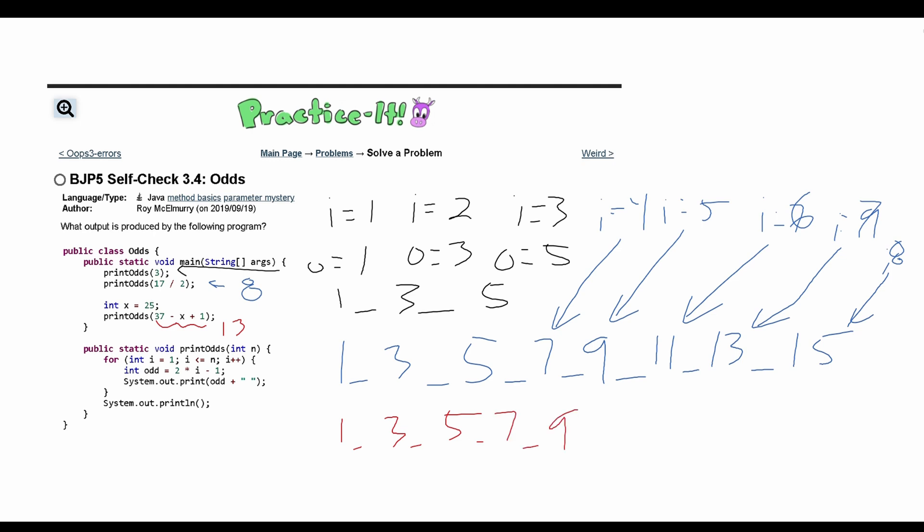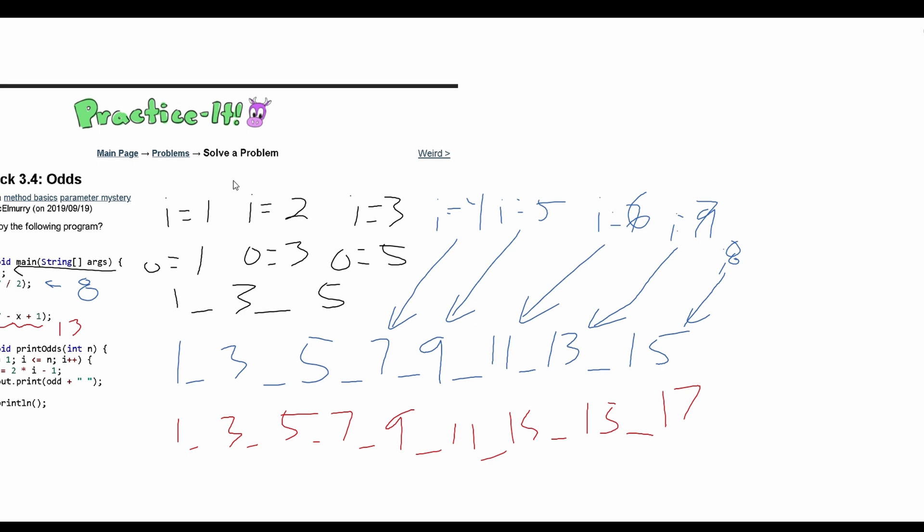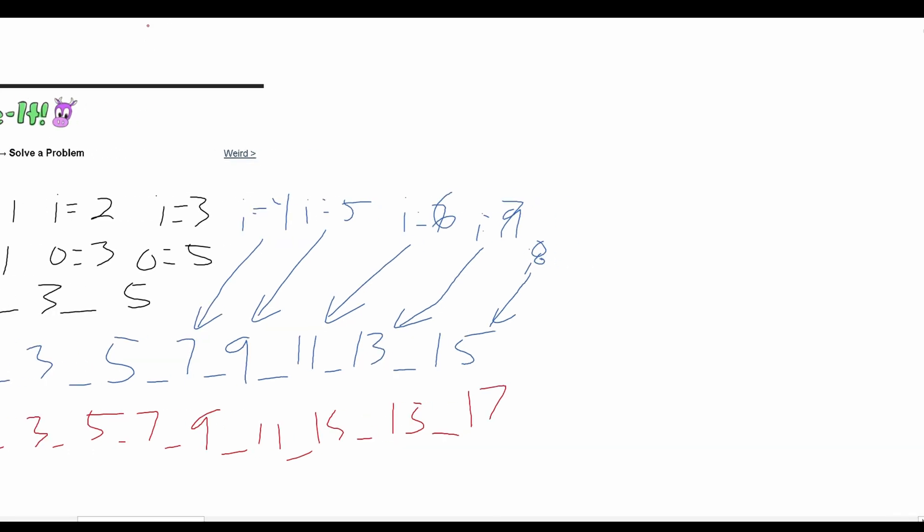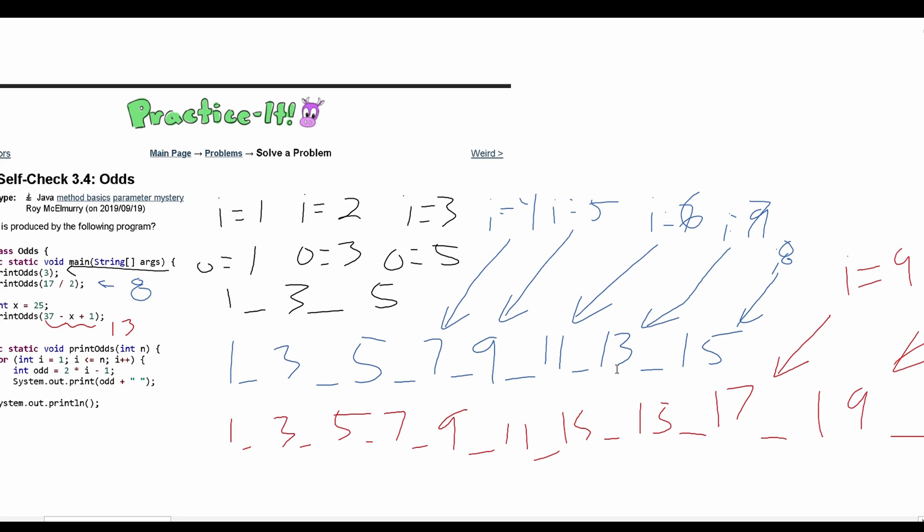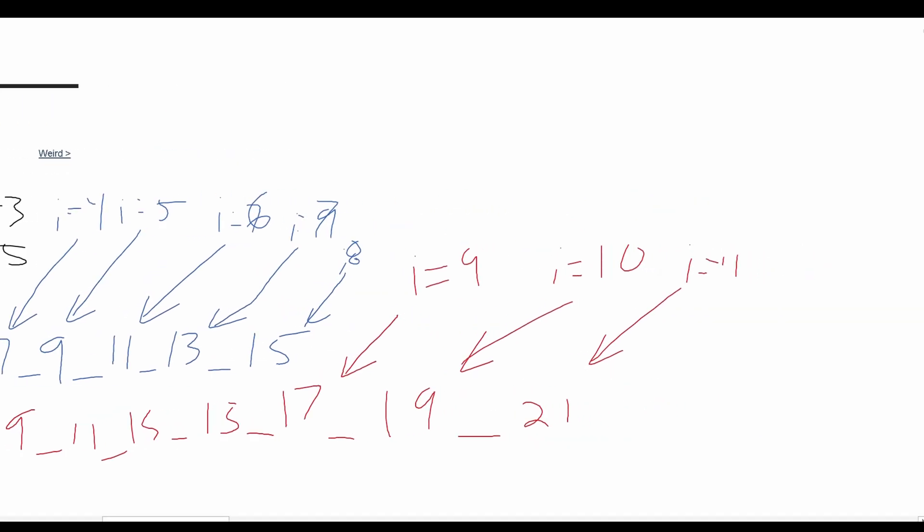So basically we have everything that we had before because it's a for loop, so it's going to print out the same thing: 1, 3, 5, 7, 9, 11, 13, and then 15. And then now we have i equals 9 that will give us 17. After 17, again we should pair these so we don't lose track. So i equals 9, and then we have i equals 10 and i equals 11. We're going to have 17, then we have 19 for this one, and then 21 for here. And see if we need to do any more, we have to do it till 13, so we have 23 and then 25.